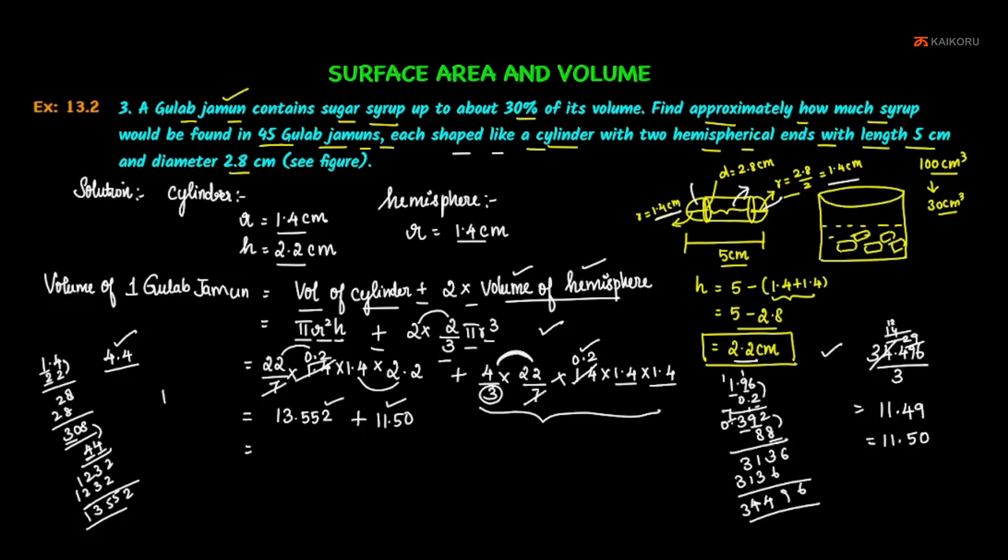Now we add these two. If we add 13.55 and 11.50, we get 25.05 centimeter cube. That's the volume of one gulab jamun: 25.05 centimeter cube.